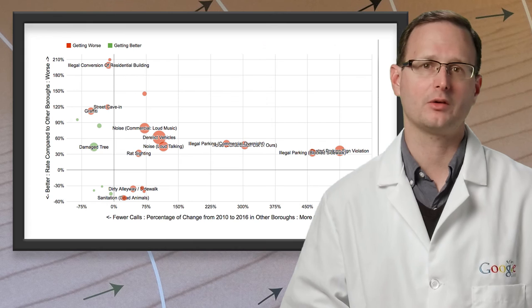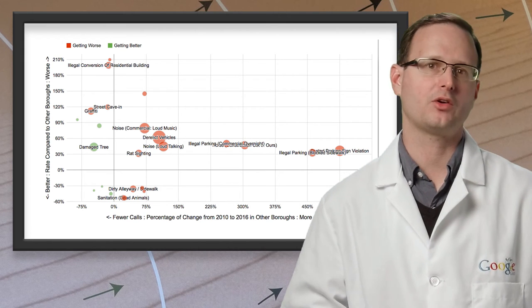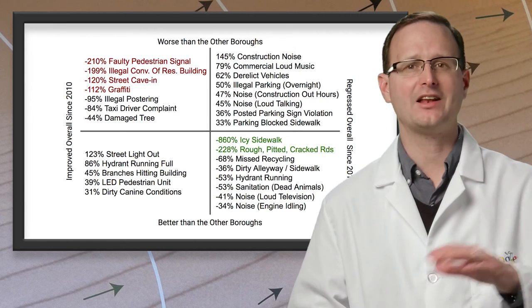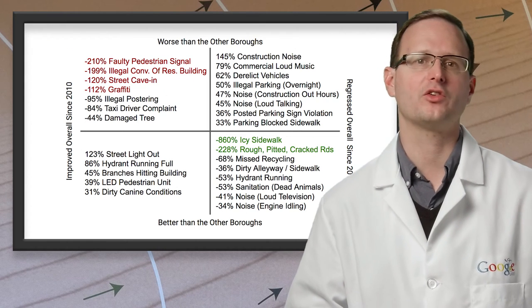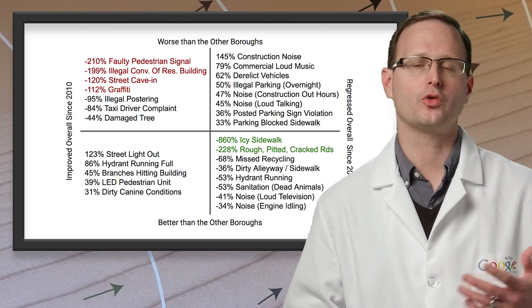Manhattan saw the largest growth in complaints, and as you can see, really drove some of the categories with the biggest increases, particularly for noise and illegal parking. It also went against the trend for graffiti, street cave-ins and faulty pedestrian signals, getting worse where the other boroughs all saw an improvement.